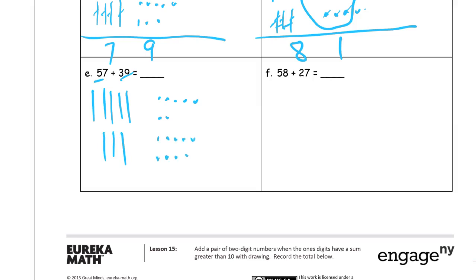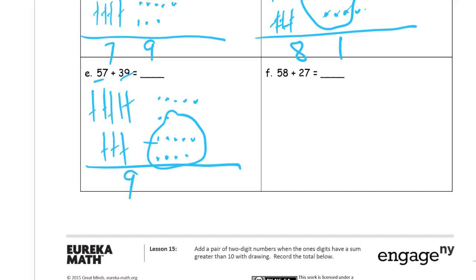I only need one more one here to make a ten with that nine. So there's a ten. One, two, three, four, five, six, seven, eight, nine tens and six ones left here — ninety-six.